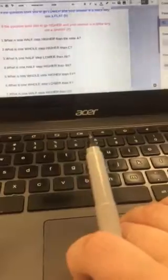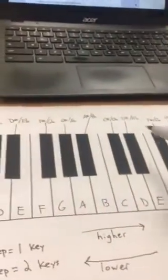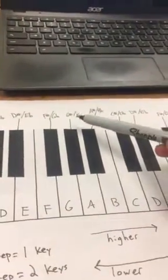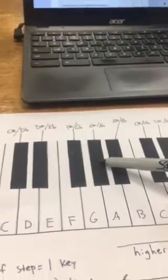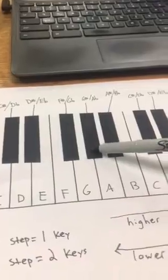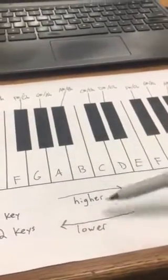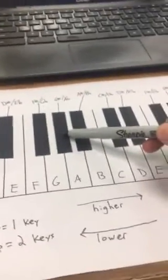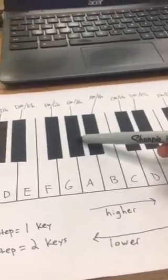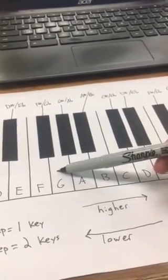So let's do number three together on the sheet. Number three says, what is one half step lower than A flat? So the first thing I've got to do is find A flat. Got an A flat right here. It asks me to do one half step. I know I've got to move one key. It also tells me to go lower. Lower keys are this way. So if I start here and I know I need to move one key lower, I'm going to go one. So I'd write G for number three.